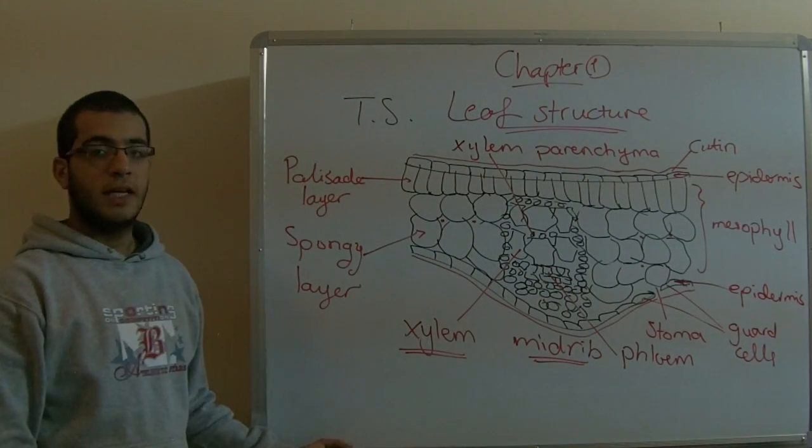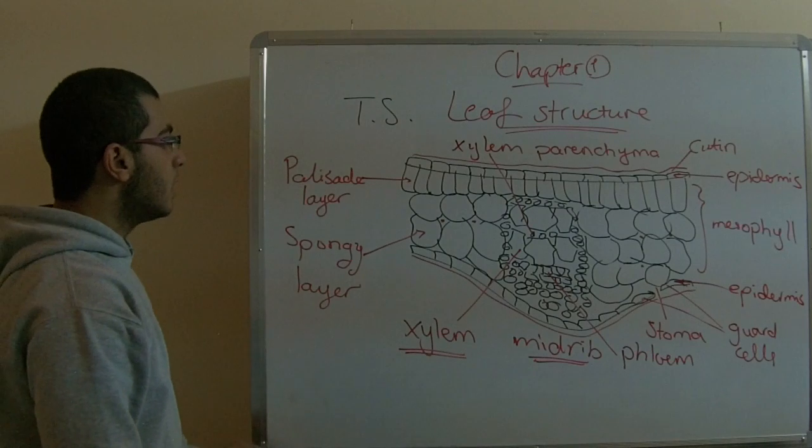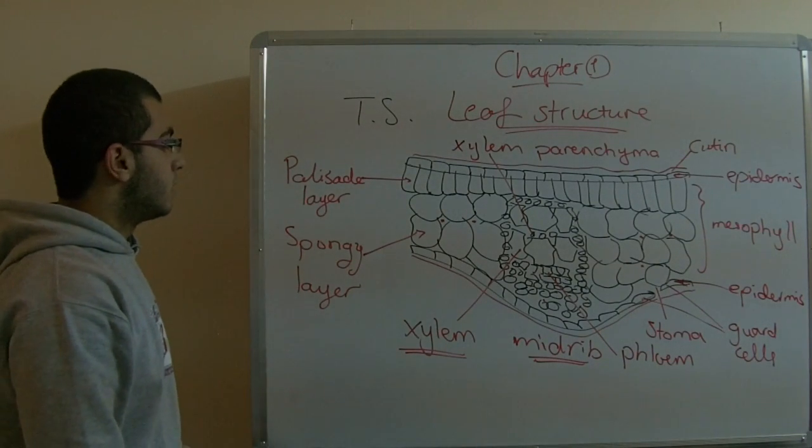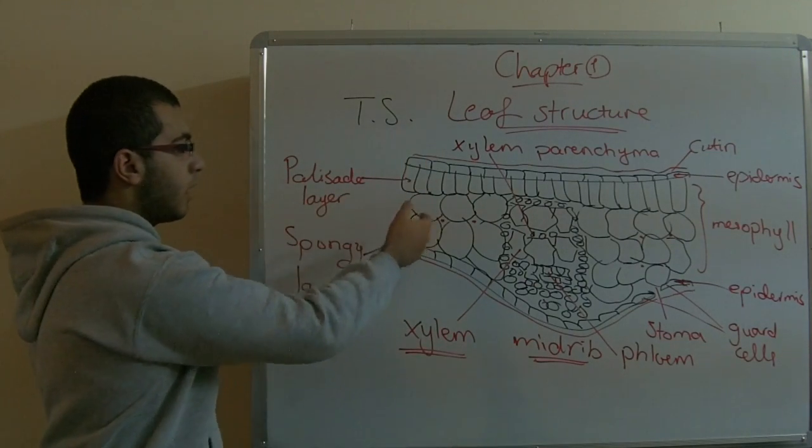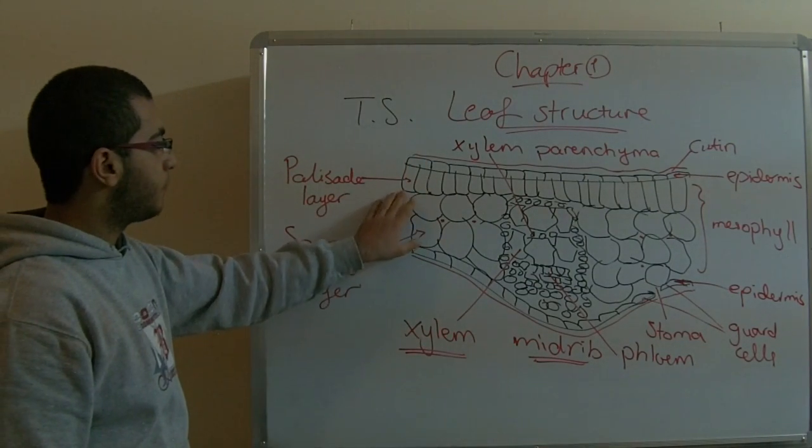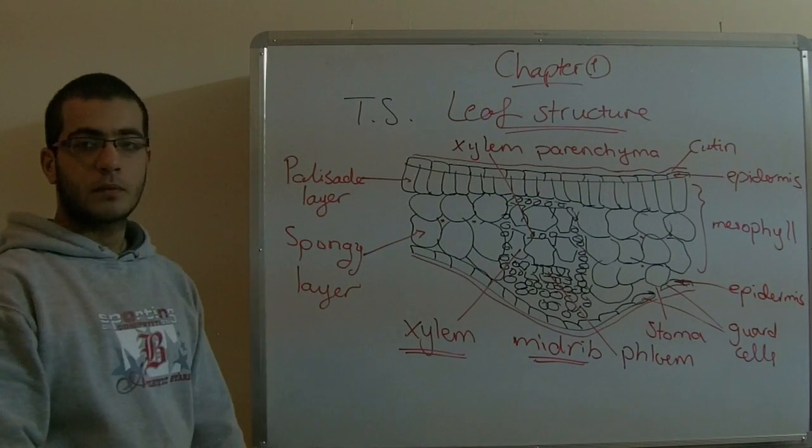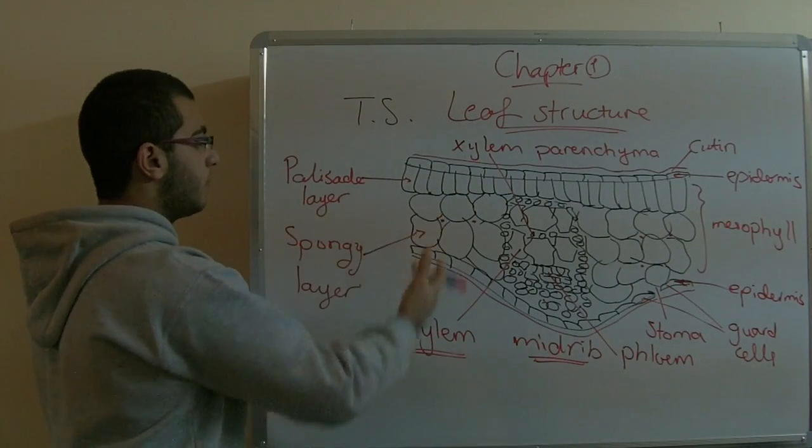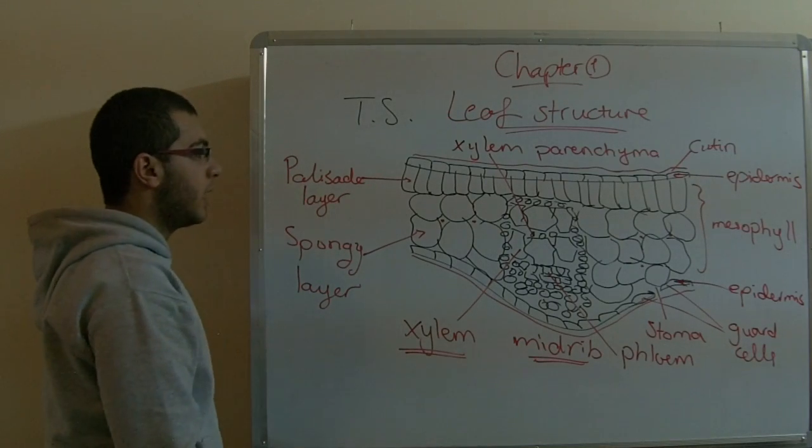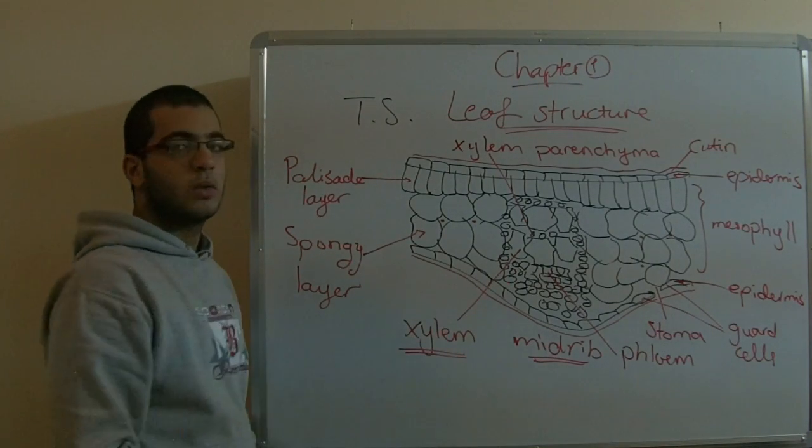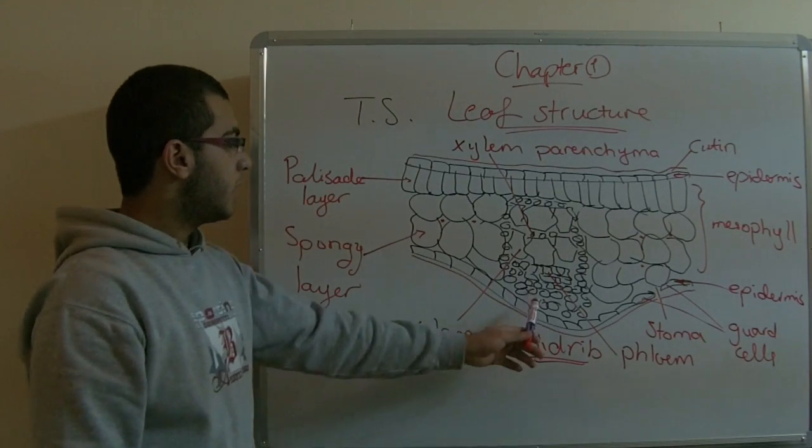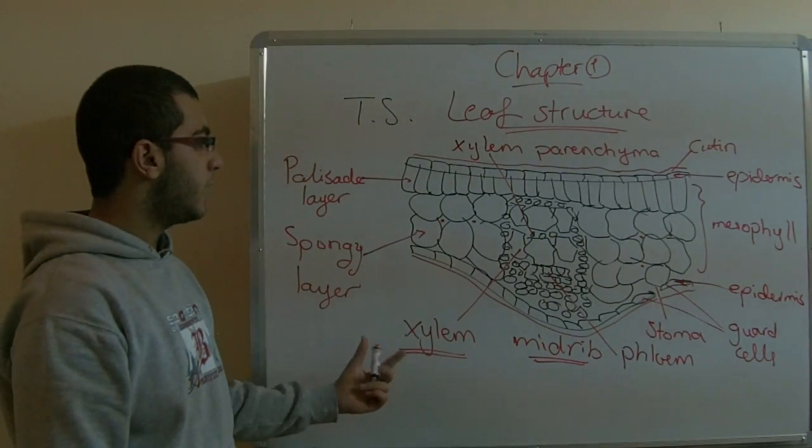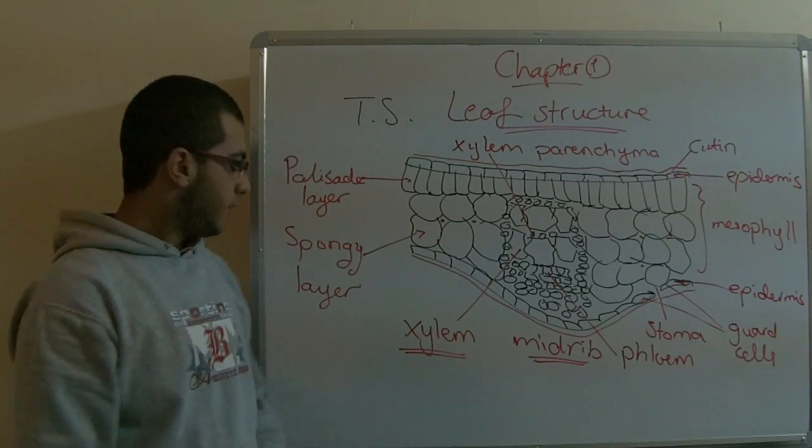This was the structure of the leaf blade, and we saw how it's adapted to its function. The palisade layer possesses a group of chloroplasts that absorb the most amount of sunlight. We have the xylem that translocates the water and salts to the leaves of the plant. We have the phloem which translocates the manufactured organic food in the leaf to all the parts of the plant, such as the stem and the roots.